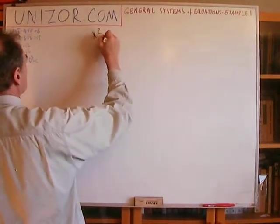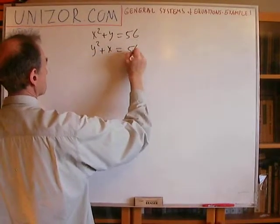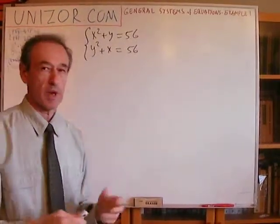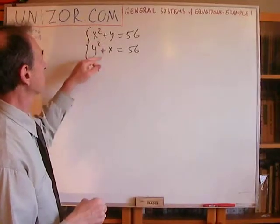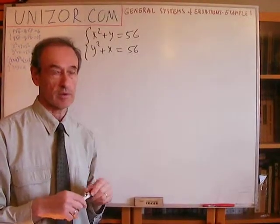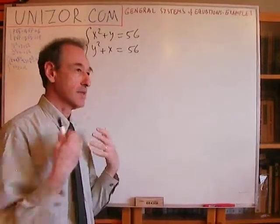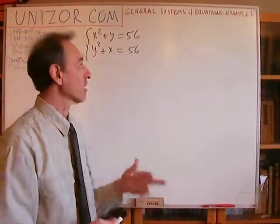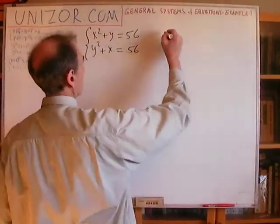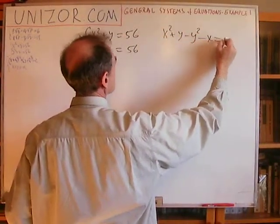Next system: X squared plus Y equals 56; Y squared plus X equals 56. What's peculiar about this? Obviously, the symmetry — and the fact that both right-hand sides are the same number, 56. That prompts us to subtract one equation from the other to get zero on the right: X squared plus Y minus Y squared minus X equals zero.